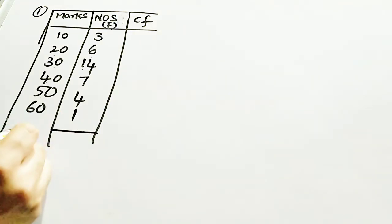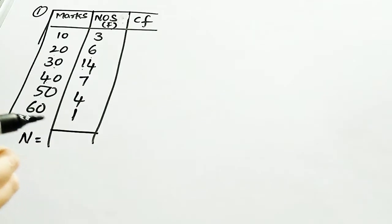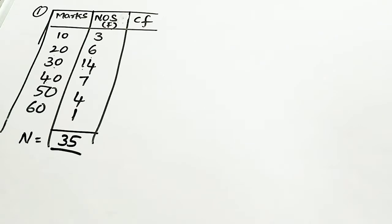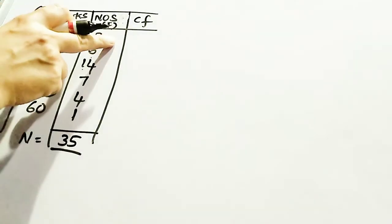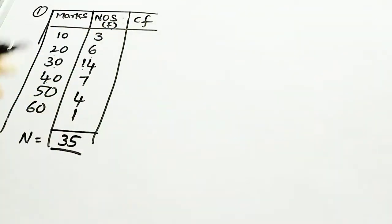First, find out the total number of students by adding the frequencies: 3 + 6 + 14 + 7 + 4 + 1 = 35. So n equals 35. When using discrete series, these values are frequencies, and you have to find the cumulative frequency.